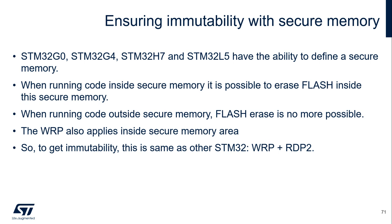On some recent chips including secure user memory, immutability can also be ensured as long as RDP level 1 is activated. When running code inside secure memory, it is possible to erase flash inside that secure memory area. But when running code outside secure memory, flash erase is not possible anymore. That means if we put the secure boot code inside the secure memory area, after jumping to the application, the application cannot make any modification to the bootloader code area. If there is still concern about modification within the secure boot code inside the secure user memory, WRP can still be applied inside the secure memory area — equivalent to WRP plus RDP level 2.